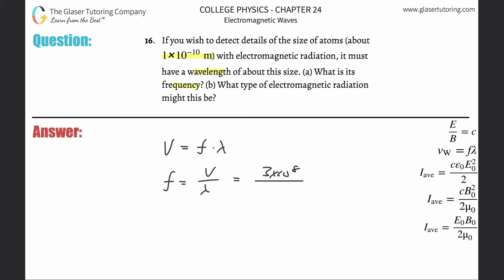So you take that and divide it by the wavelength of 1×10^-10, and this will work out to be 3×10^18 hertz. That's how many cycles there are per second.